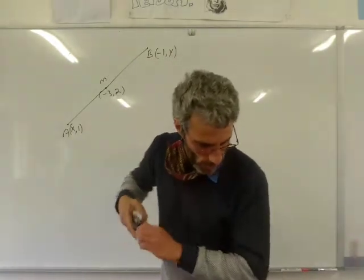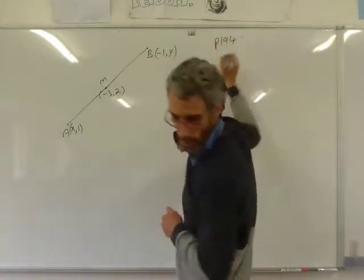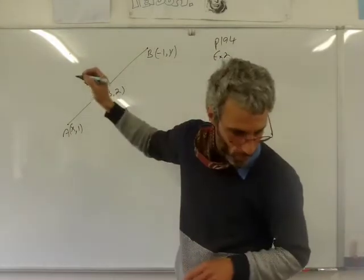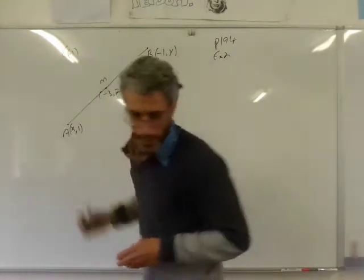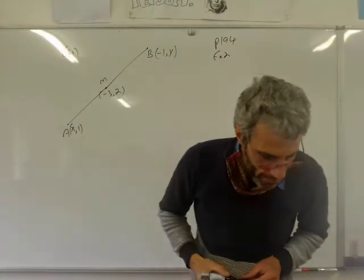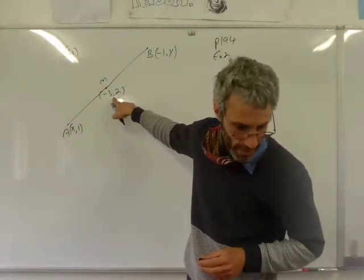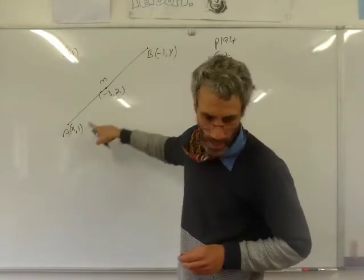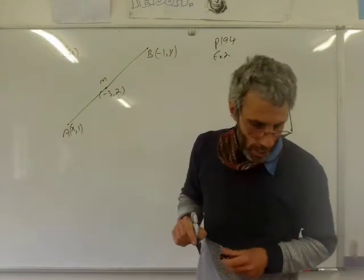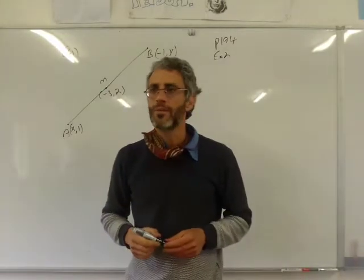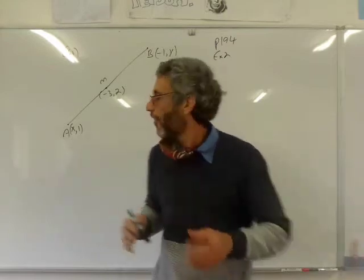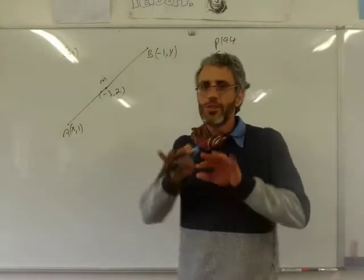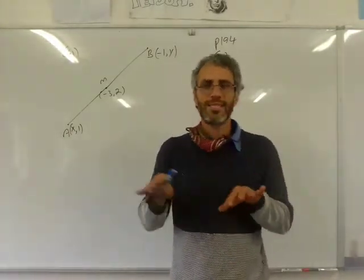So I'll just read the question. This is, by the way, from page 194, exercise 2. And I'm going through C1. So I'm told if M, which is minus 3, 2, is the midpoint of a line segment joining the point A, which is X, 1, and B minus 1, Y. Now, calculate the values of X and Y. The trick is to look at the X coordinate and the Y coordinate separately.